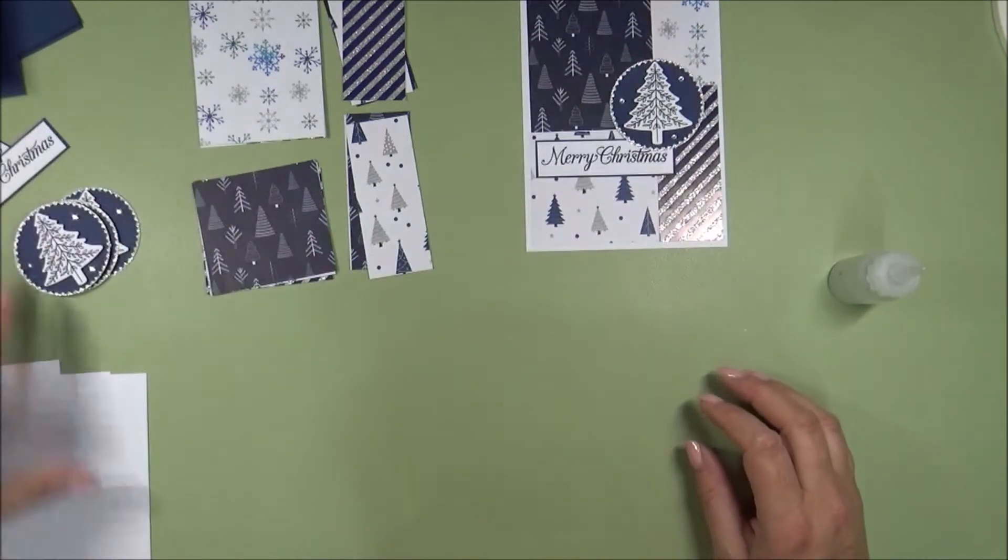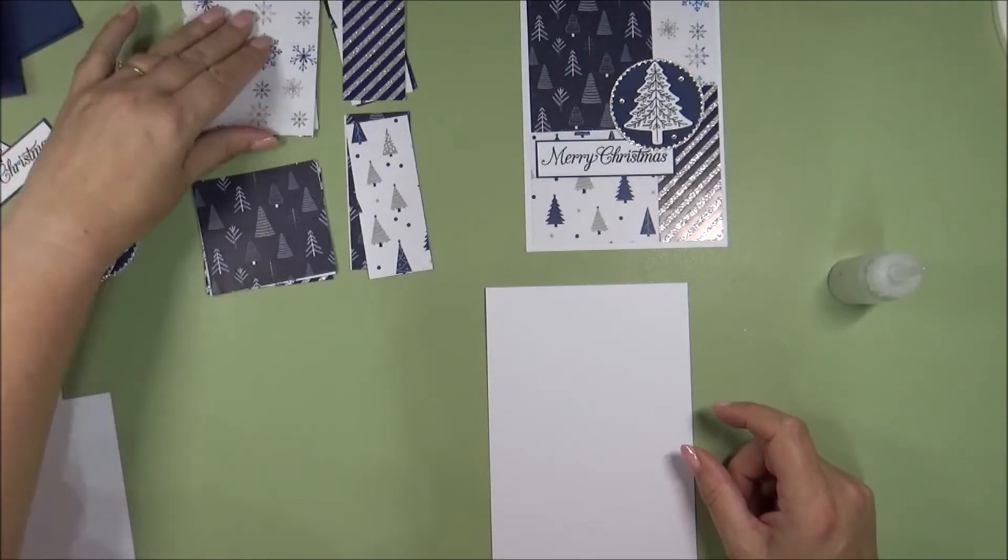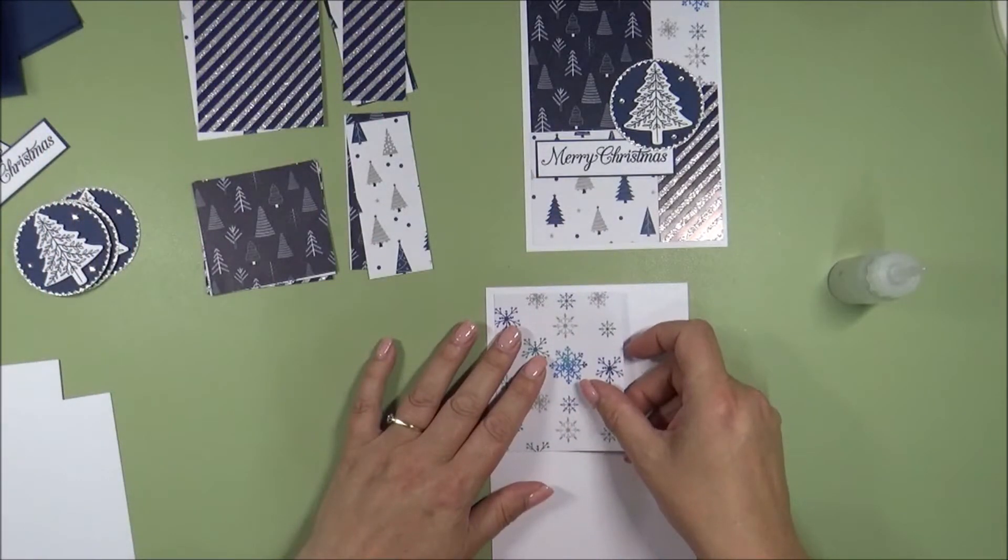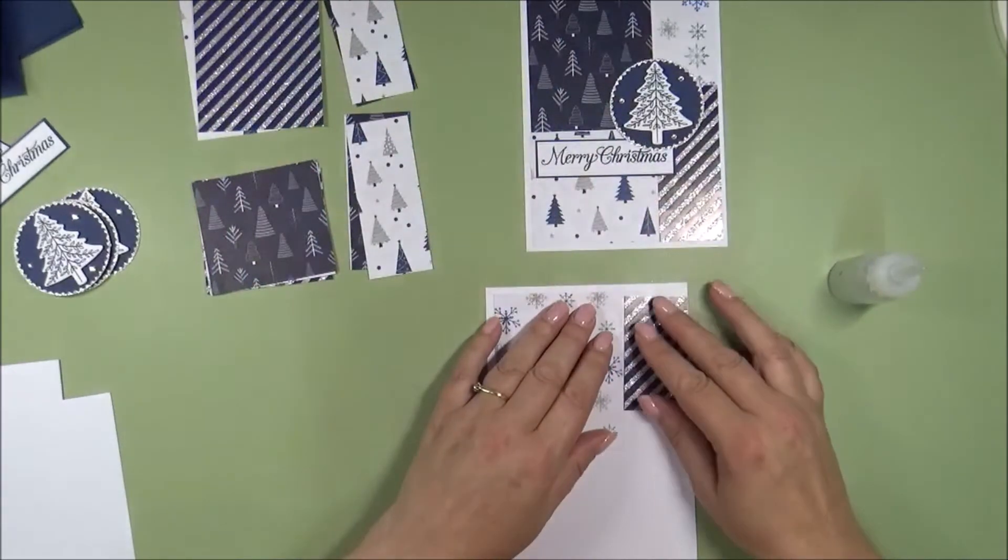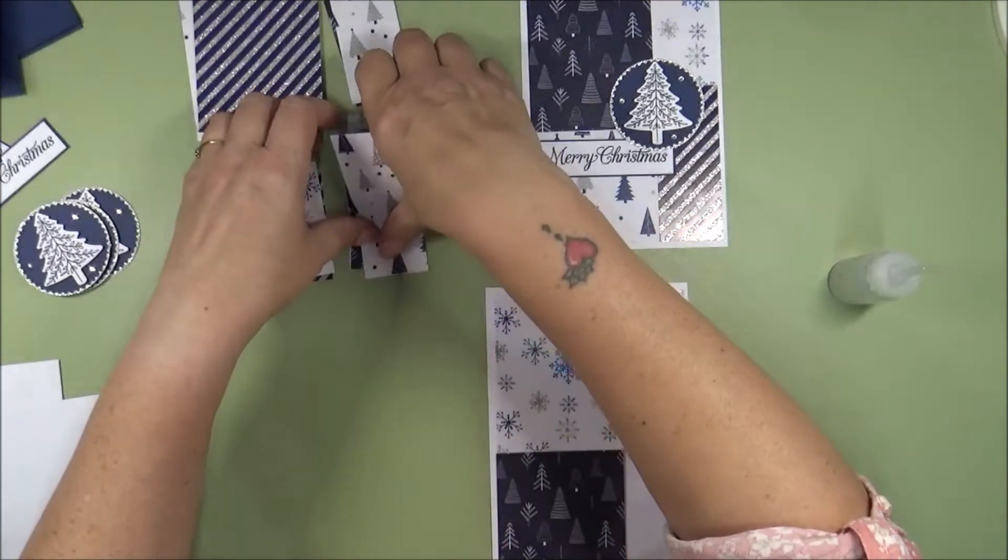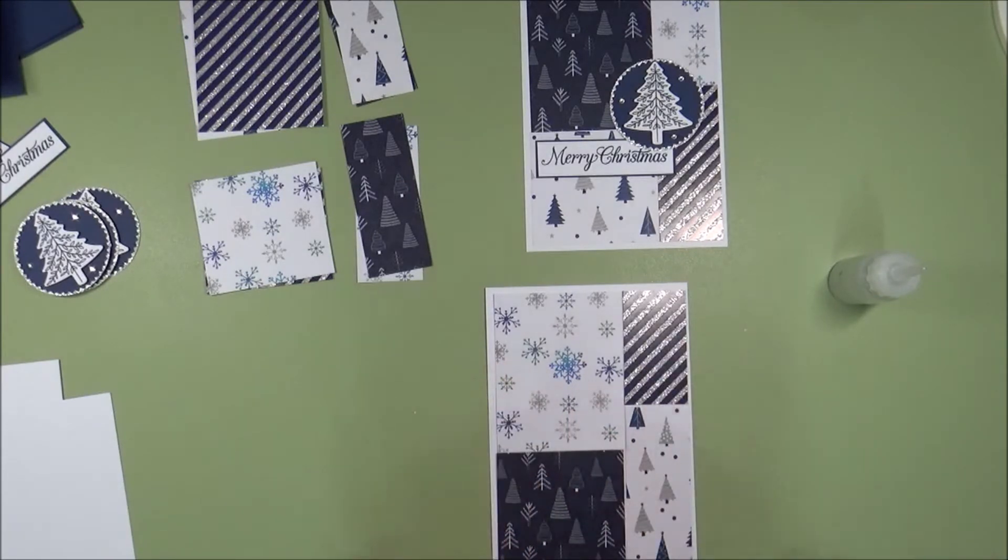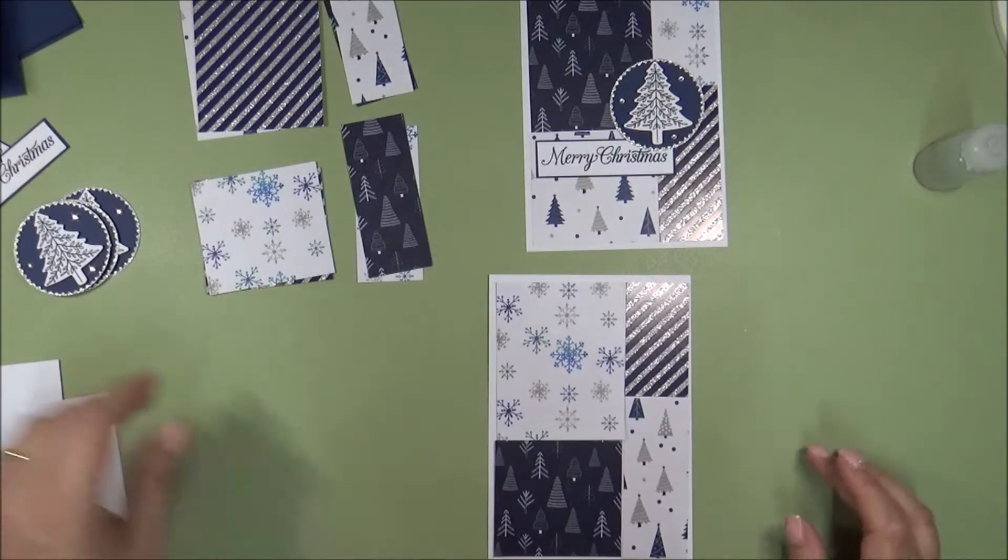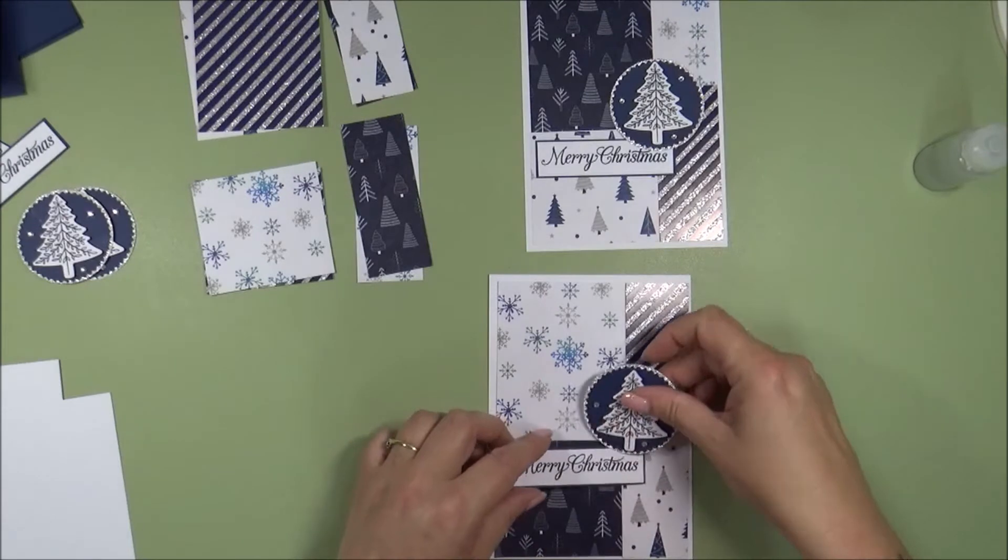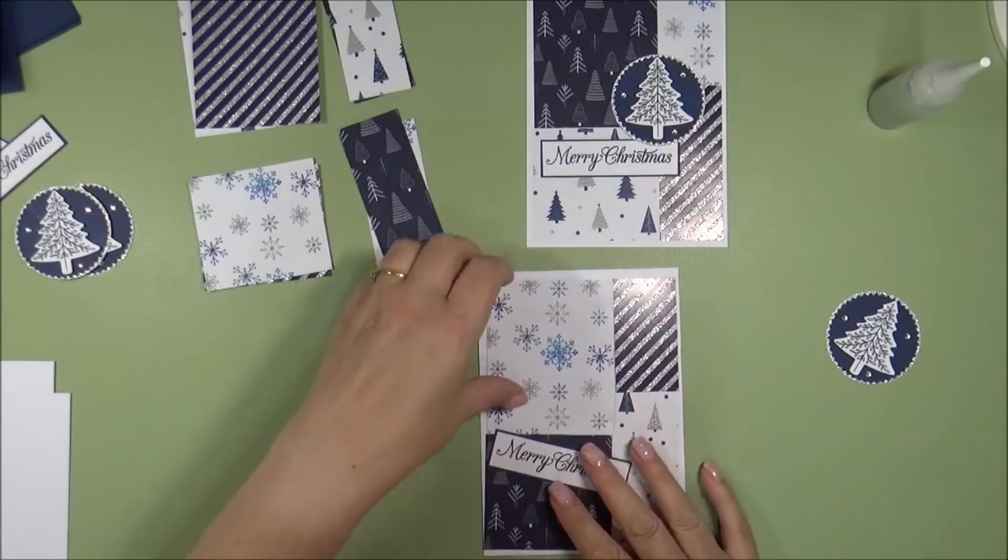And then your next card, you will grab your mat, and you just grab the next piece of pattern paper down on the top left, and then grab the next piece and the next piece, and the next piece. And so then you've got quick, easy cards, but looking slightly different. So I'm going to go ahead and I'm going to stick all my pieces down onto my mats.